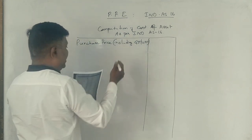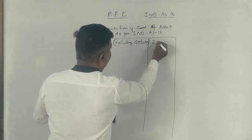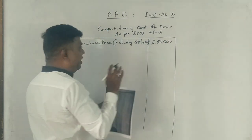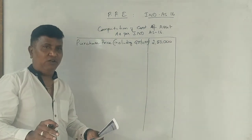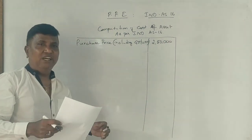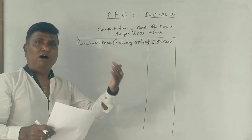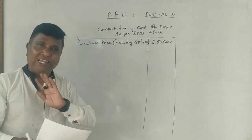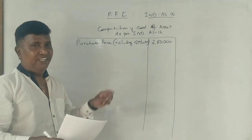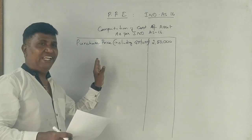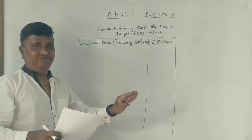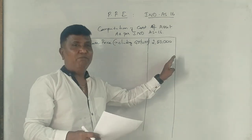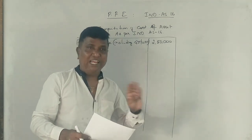Yesterday it was Rs. 250,000. Now, the GST — if you don't have credit, he is not getting any GST as a credit. But for the cost of the asset, that's why we don't include GST.